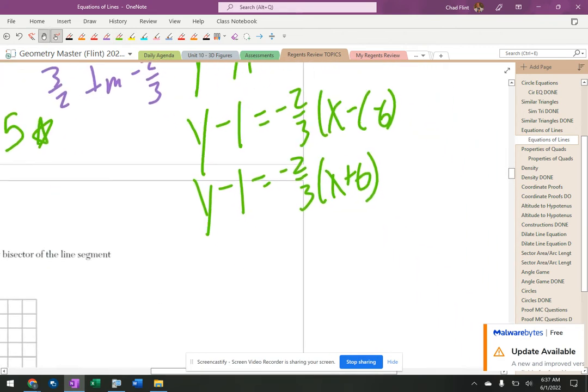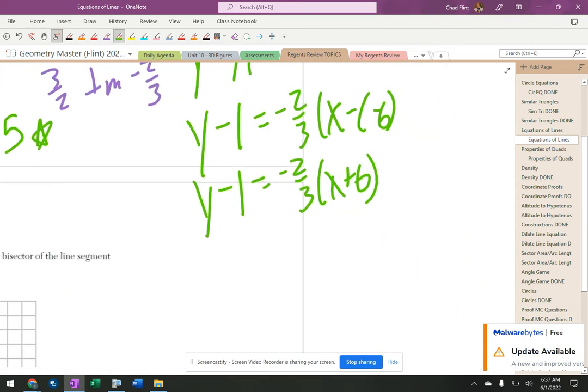Now normally I'm done, but of course this one they want it in y equals form, so I've got to do a little algebra. y minus 1 equals negative 2 thirds x minus 4.